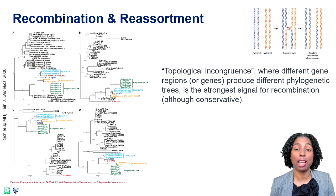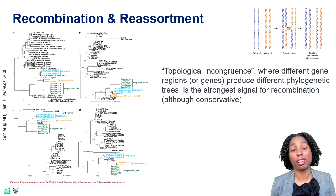Topological incongruence, as seen in the trees on the left, where different genetic regions produce different phylogenetic trees, represents the strongest signal for recombination. Thus, a phylogenetic tree cannot appropriately explain recombination events.